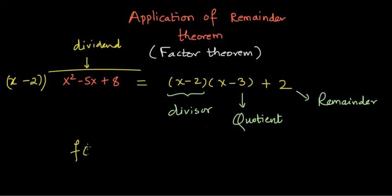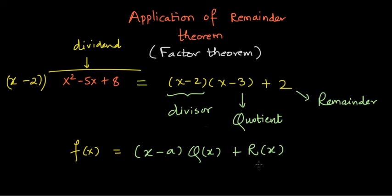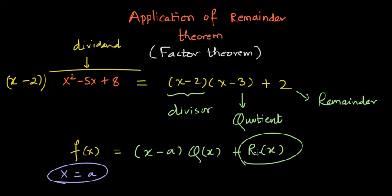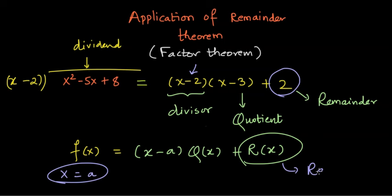Generalizing this, we can write any given polynomial with a divisor of the form (x - a), a quotient q(x), and a remainder r. If I want to find the remainder when dividing by (x - a), I can put x = a. Doing so makes the divisor-quotient term go to 0, and I'm only left with the remainder. Putting x = 2 in our example, the (x - 2) term vanishes and I'm left with 2, which is the remainder. That is what the remainder theorem says.